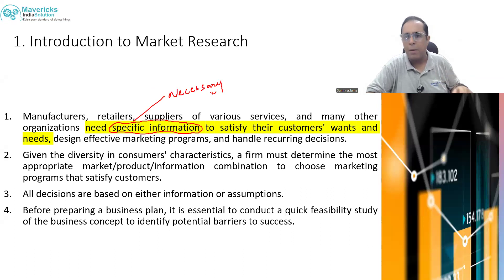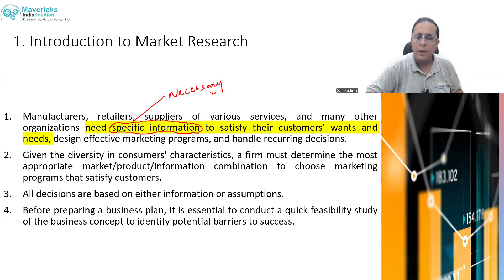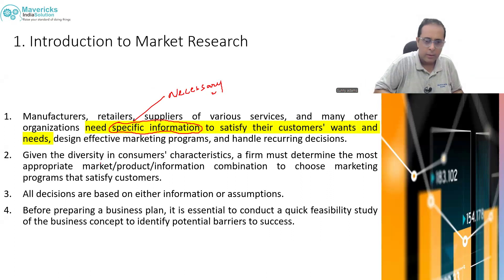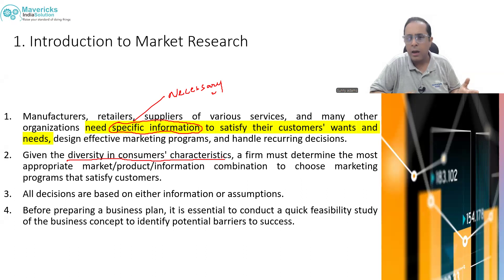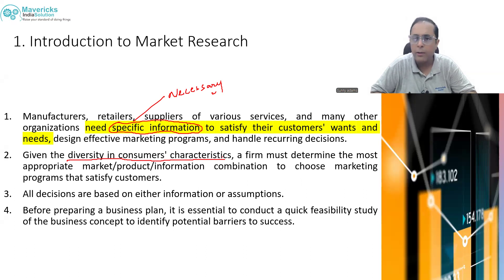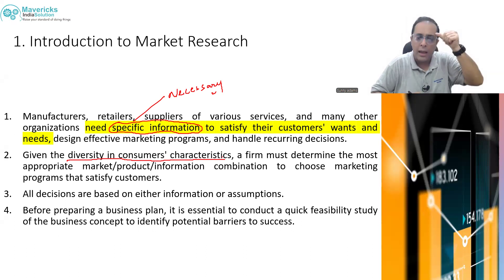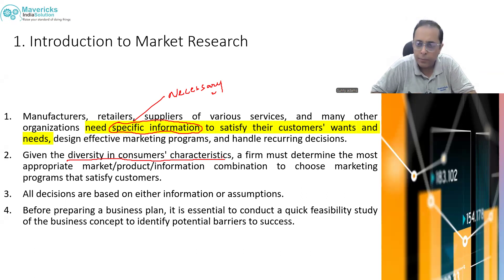The only thing you will get out of that market without understanding is frustration. Second point: given the diversity in consumers' characteristics — you will get different types of consumers in one market who are all very varied — a firm must determine the most appropriate market, product, and information combination to choose a marketing program and satisfy customers. The market must be appropriate and specific, the product requirements must be specific, and the information must be specific.